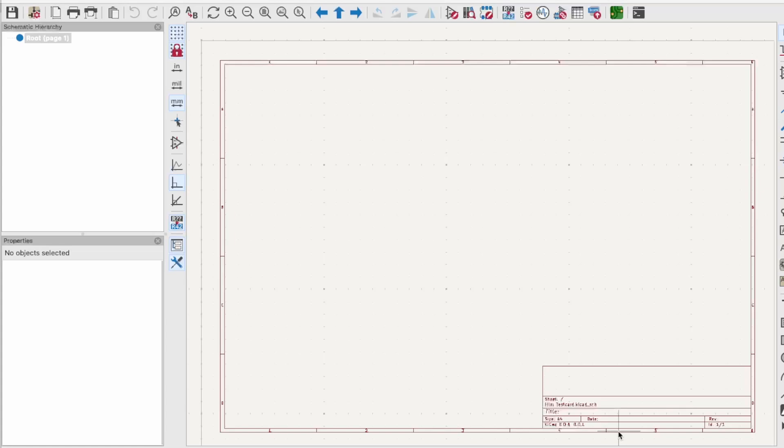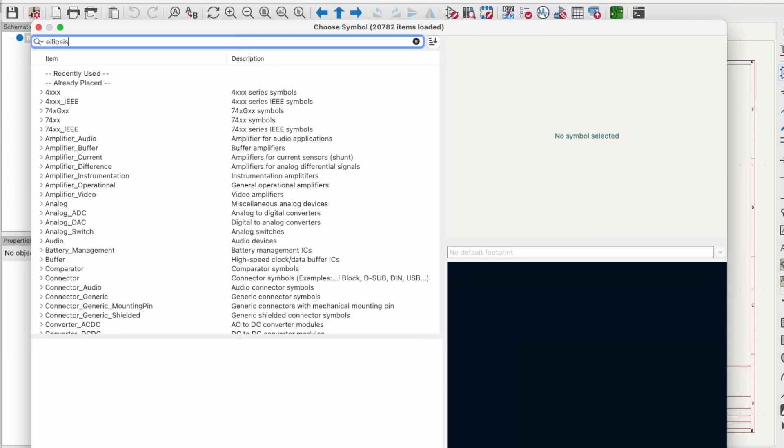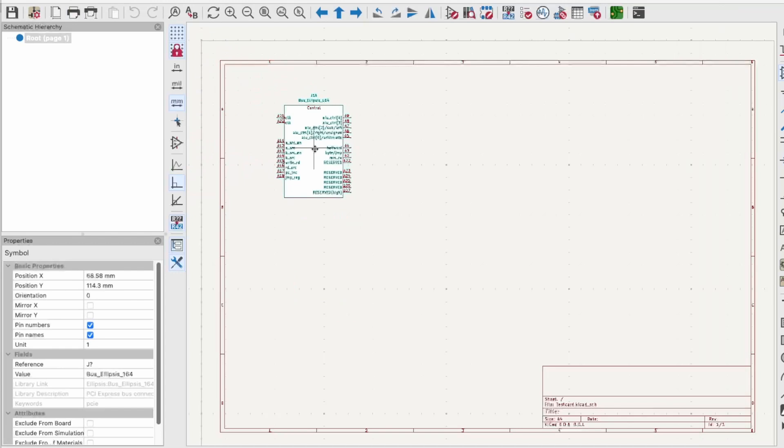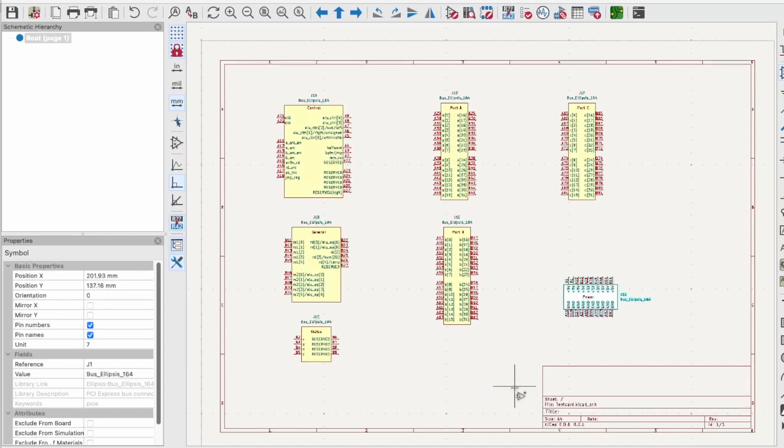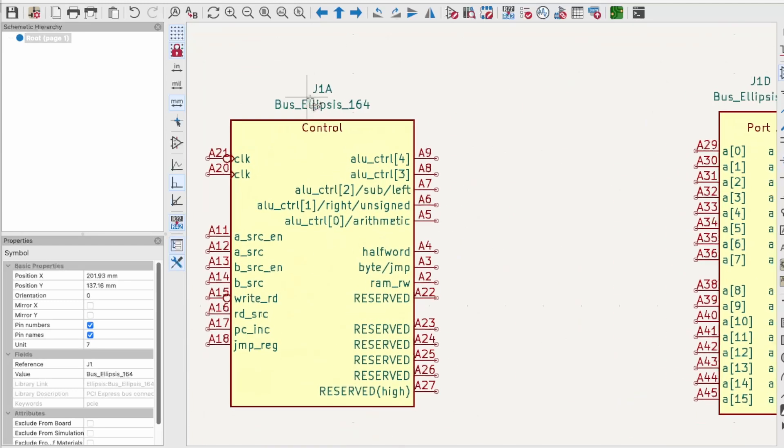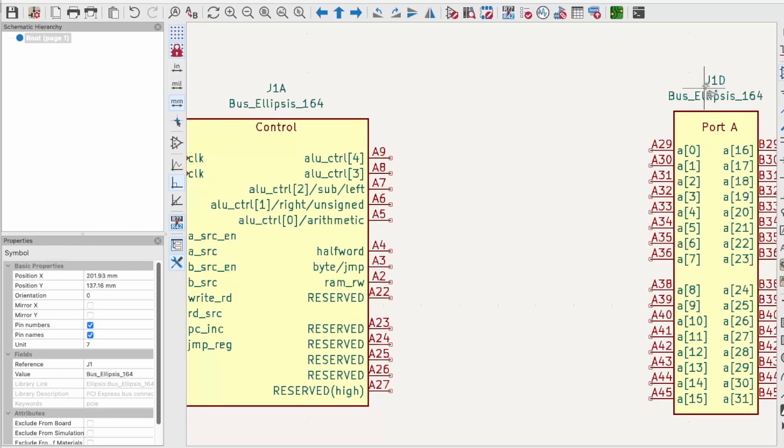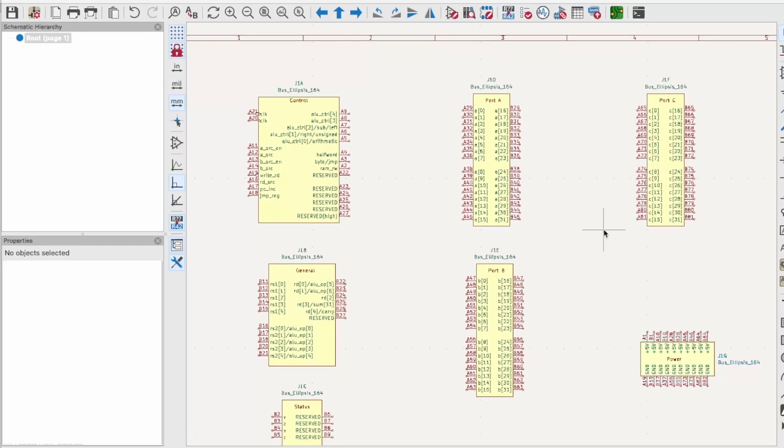I can add the custom symbol in the same way I add any other component by pressing A and then searching for my component. You can see that if I expand the custom component here, it has units A through G as we saw. I can add each of these individually, but if I just select the root level here and click OK, then it will allow me to add them one by one. I'll add each unit and each of those units will be connected based on their name. If I zoom in here we can see this is the bus ellipsis 164 J1A. J1A represents the symbol number, so it's symbol number one and unit A. Over here I have symbol one and unit D. Because these are all J1, they're all connected, so when I go to the PCB designer all of these units will be combined together into the card edge or the socket. These three units here are the 32-bit buses, the two inputs to the ALU and the output from the ALU.